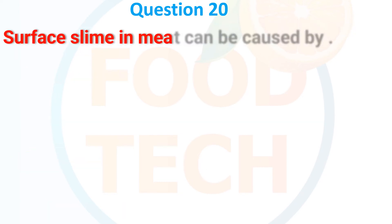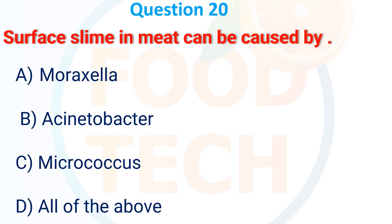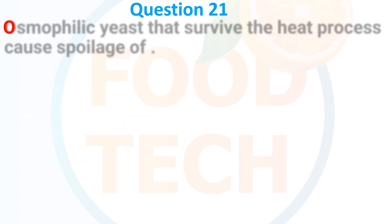Surface slime in meat can be caused by: A, Moraxella; B, Acetobacterium; C, Micrococcus; D, all of them. The answer is D, all of them.